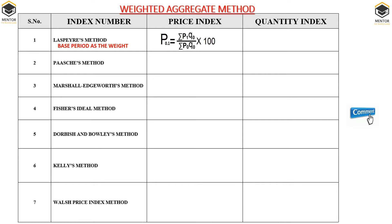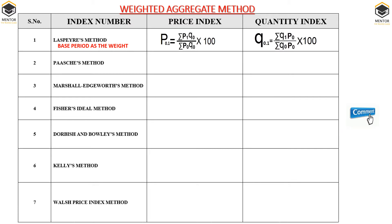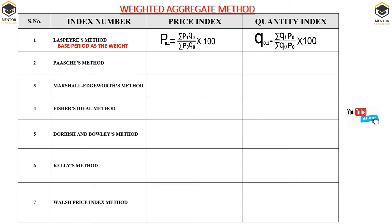In both numerator and denominator I have multiplied P1 and P0 with Q0 — it means the author has given the weight to the base year quantity. Next we have the quantity index. The formula is Q01, quantity index of current year based on base year, equals summation Q1P0 divided by summation Q0P0 into 100. It means the author has given the weight to the base year price. These are the formulas of Laspeyre's method.